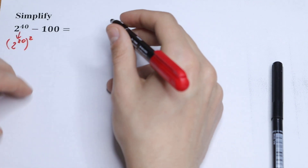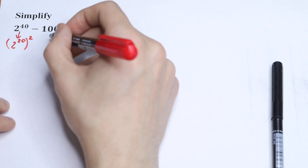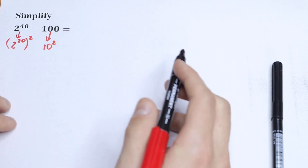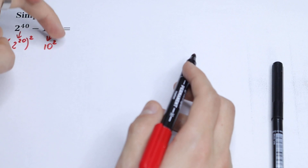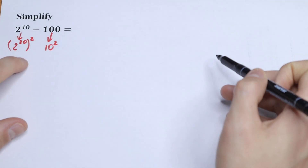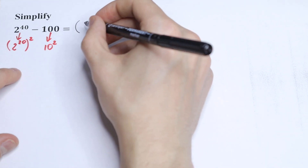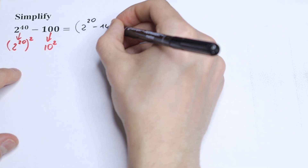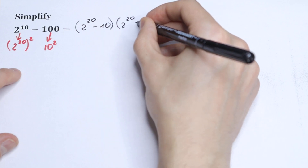And this 100 we can write as 10 squared. So as you can see, we'll have a difference of squares: a squared minus b squared, which is equal to (a minus b) times (a plus b). So we can write this as (2 to the 20th power minus 10) times (2 to the 20th power plus 10).